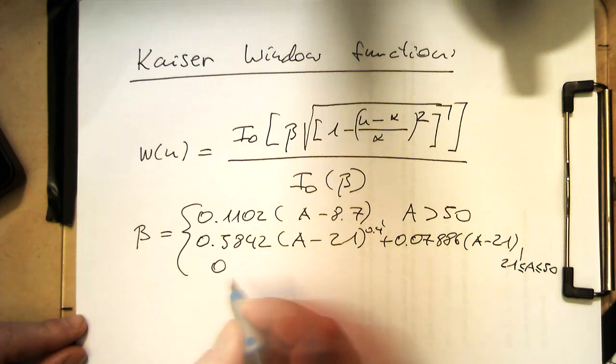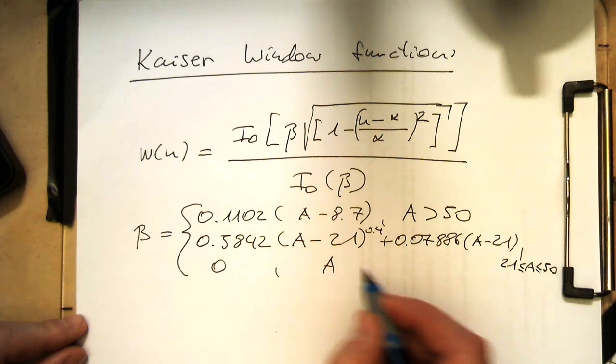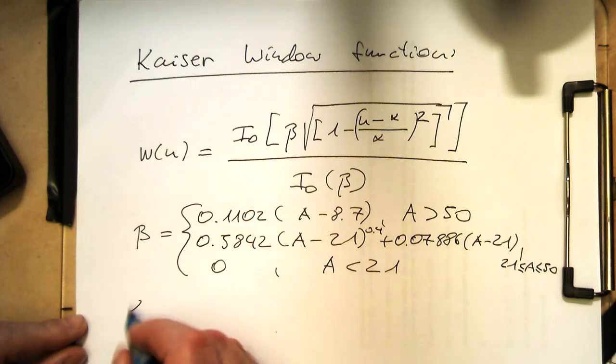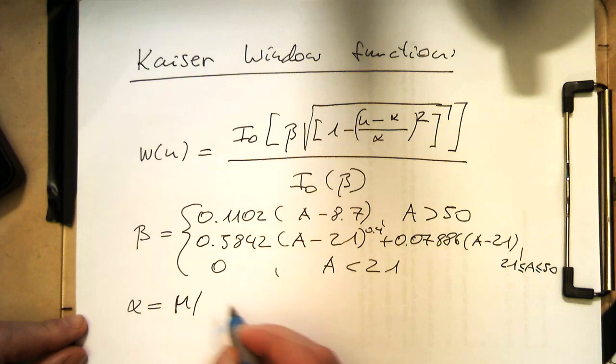And otherwise it's zero for A smaller than 21. And alpha is M half, what we have calculated before. So that's it.